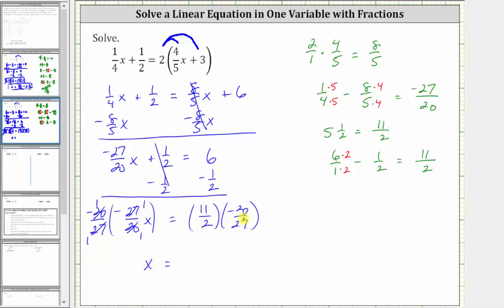And on the right side, notice here we have a common factor of two between two and negative 20. We have one two in two and ten twos in 20. And now we multiply, being careful of the signs. In the numerator, we have 11 times negative 10, which is negative 110. And the denominator is one times 27 or 27. So this is the solution to the equation.